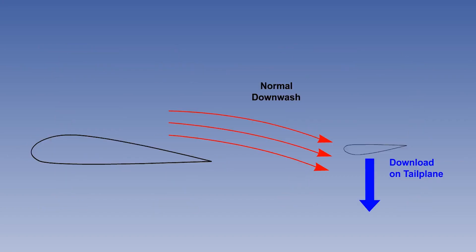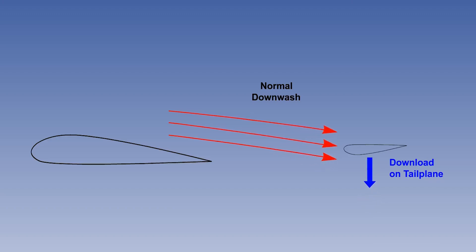Whilst ground effect may possibly change the aerodynamic characteristics of the tailplane in its own right, a low-mounted tailplane will have its effective angle of attack modified by the change in downwash. As the aircraft comes into ground effect, the tailplane loses downforce,